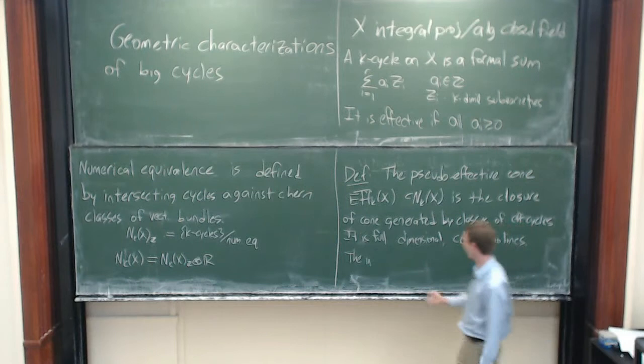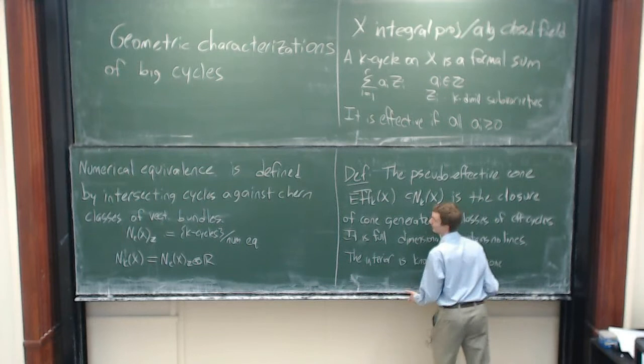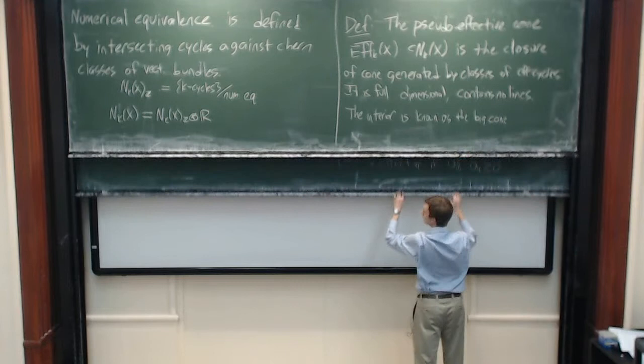So this is the pseudo-effective cone. One last definition: the interior of the pseudo-effective cone is known as the big cone. We're going to keep the notation for divisors and use it for cycles.